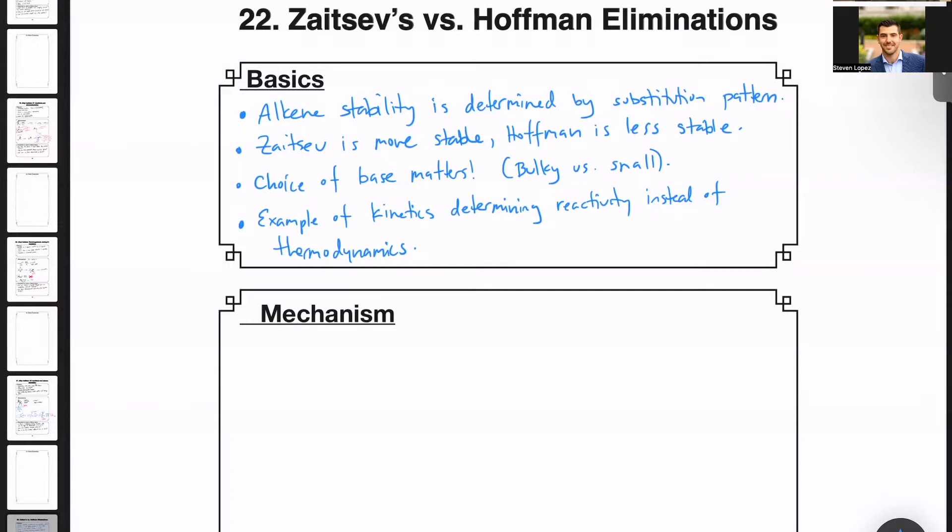Which base is used in an elimination reaction is really important for favoring the Zaitsev or the Hoffman product, depending on the substrate and the type of base.